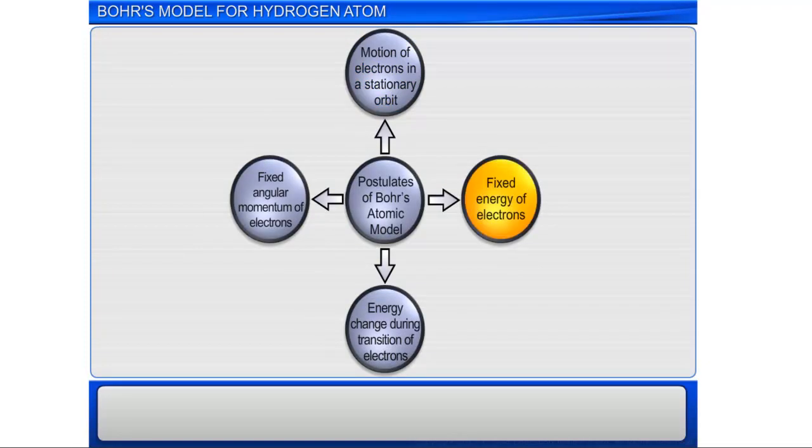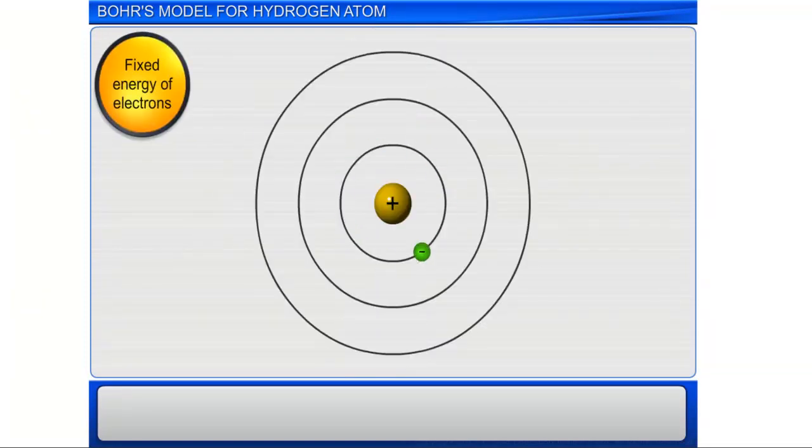According to the second postulate, the energy of an electron in the orbit remains constant until the electron absorbs energy to jump to a higher orbit or releases energy to move to a lower orbit.